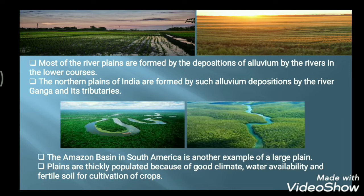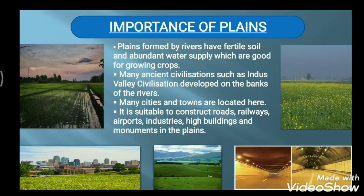The reason plains are thickly populated is because of good climate, water availability, and fertile soil for cultivation of crops. The climate is moderate — not too hot or too cold. Water availability is more than in other areas such as deserts or hill areas. Because of the presence of alluvium, the soil here is very fertile, which helps farmers cultivate different kinds of crops.